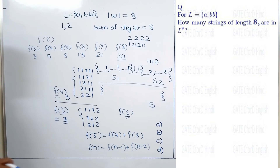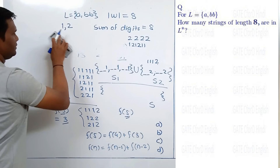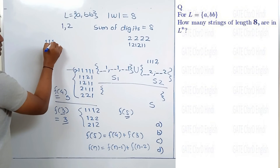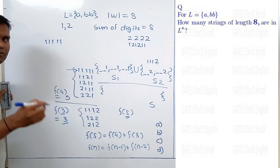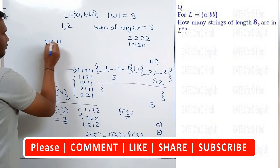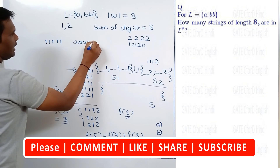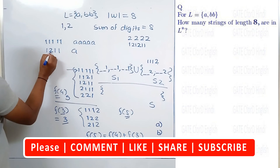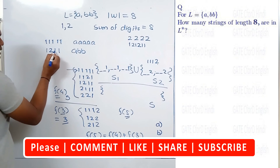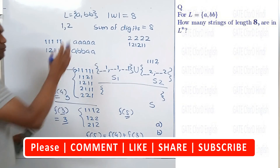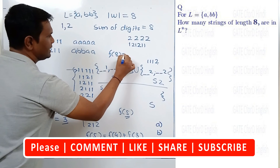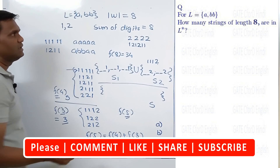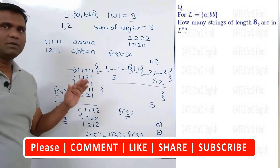So how is this problem similar to the original problem? It is very simple and straightforward. Take any number, for example 11111, and replace every 1 with A and every 2 with BB. So 11111 becomes the string AAAAA. If we take 1211, replacing 1 with A and 2 with BB gives A BB A A. The problem is exactly the same, and since we calculated f(8) = 34, there are 34 strings that can be formed using A and BB such that the length of the string is 8. This is how this problem is similar to the Fibonacci function.